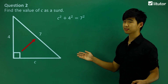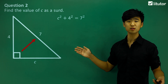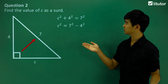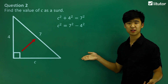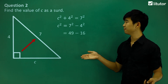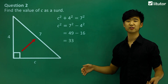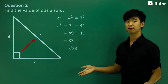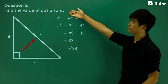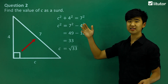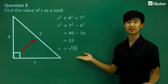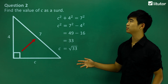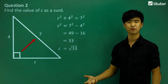Like last time, we want to get everything away from c as much as possible, so we move the 4 squared onto the other side. We calculate 49 take away 16, which gives 33. So c squared equals 33, meaning c must be the square root of 33. The question says find the value of c as a surd, so we leave the square root symbol — that is the answer. It's a pretty straightforward question.